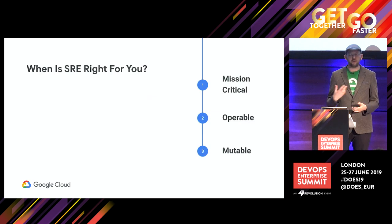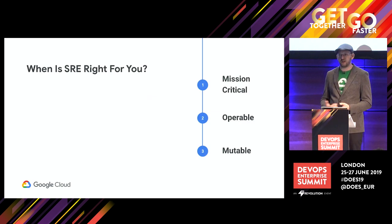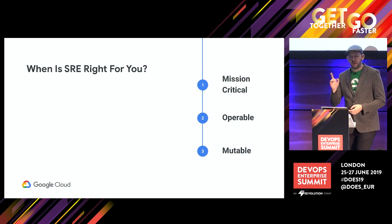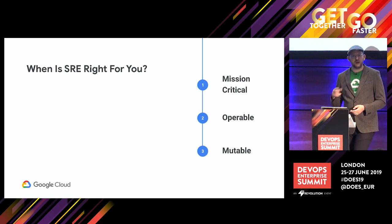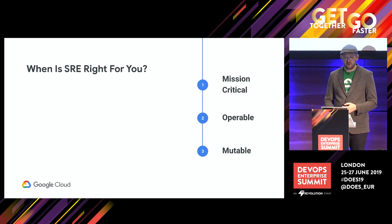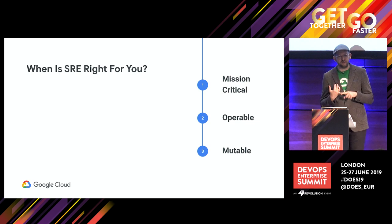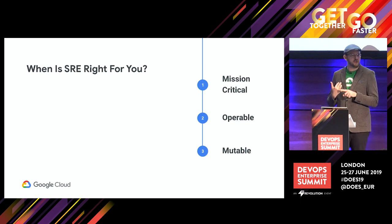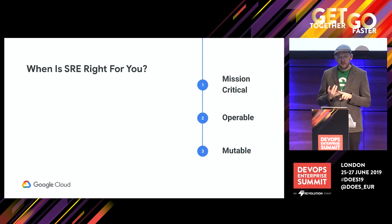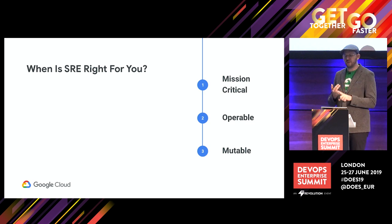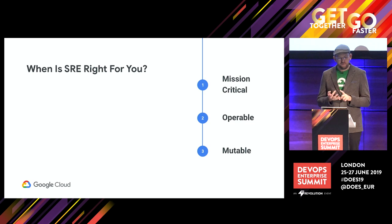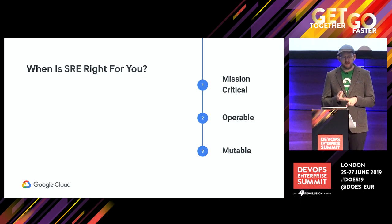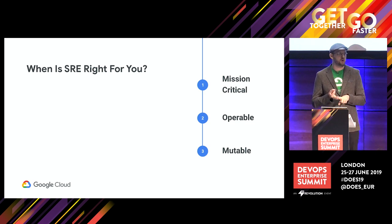So when is SRE right for you? I think you need to hit all three of these points to be maximally successful — the closer you get, the better. Mission critical: is it worth it to the business to invest in site reliability engineering? Operable: can the SREs do anything on the system to maintain it, and what about when things go wrong? And mutable: can SRE make it better over time? Mission critical, operable, mutable — these are three dimensions. They're not binary yes or no, but relative. You can say this system is more operable than that system.